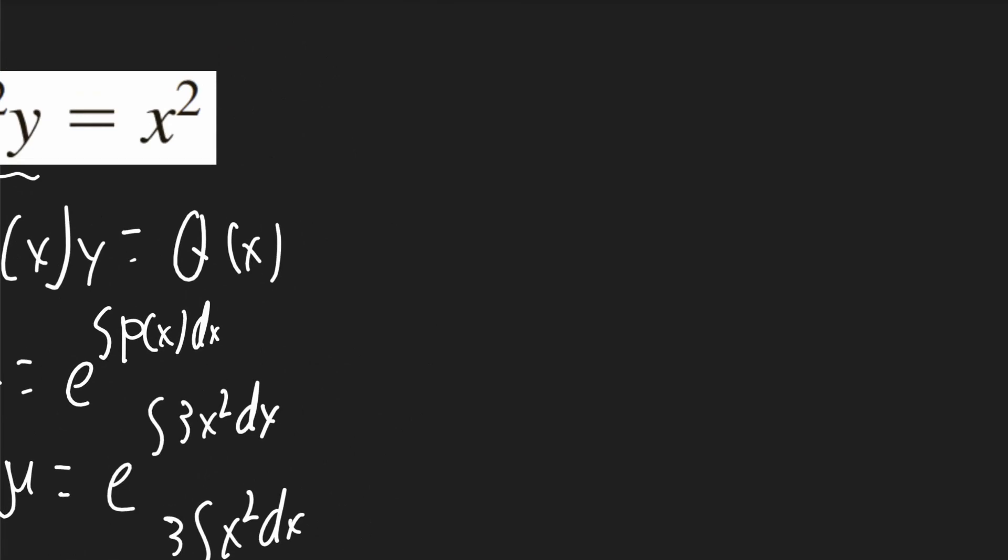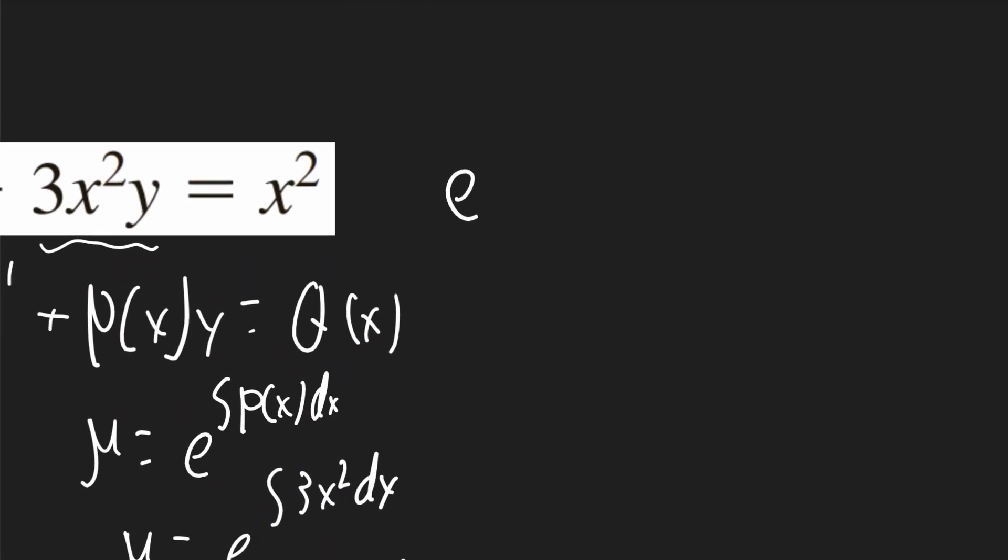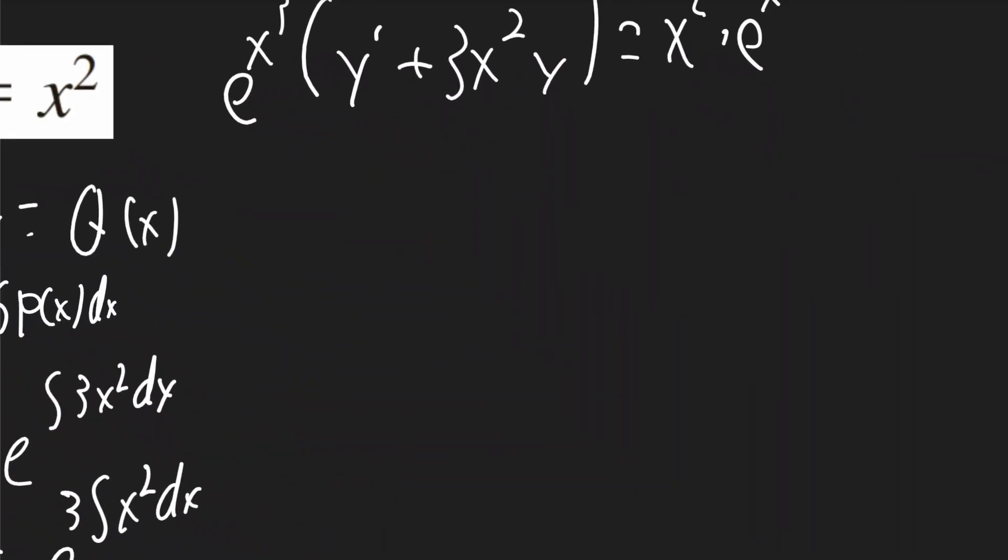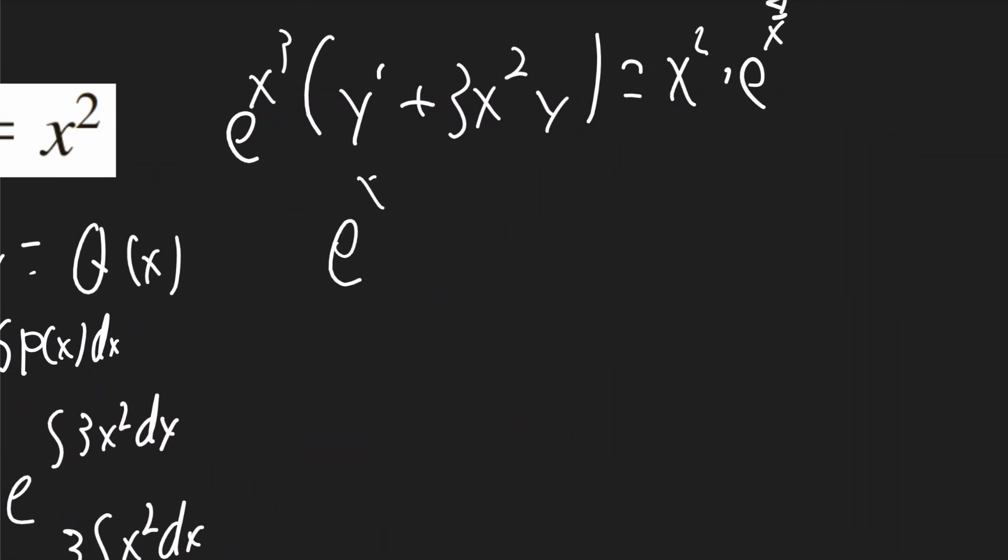Now I can multiply that to all the terms up here. So it'll be e to the x cubed times y prime plus 3x squared y is equal to x squared times e to the x cubed. So I can distribute all those terms. It'll be e to the x cubed times y prime plus 3e to the x cubed times x squared times y. This will be equal to e to the x cubed times x squared.